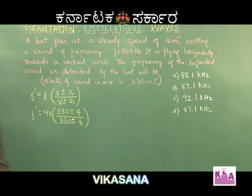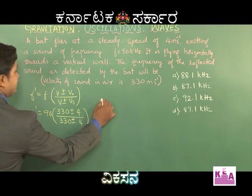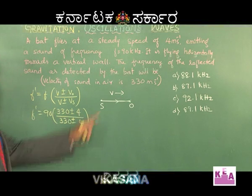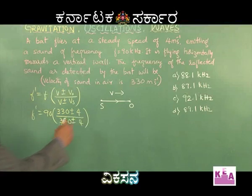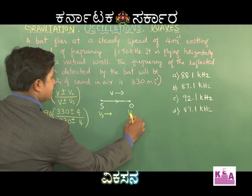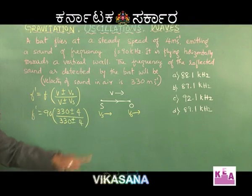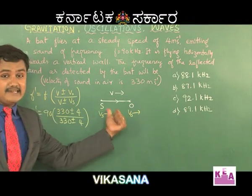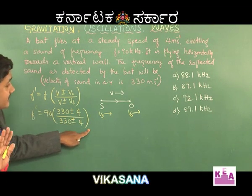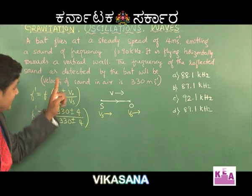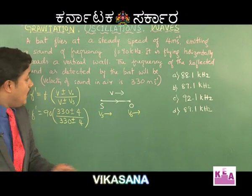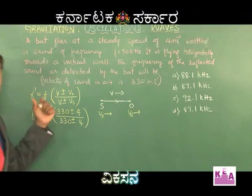The sign convention says: if source and observer are positioned such that sound travels from source to observer in the assigned direction, and the source moves toward the observer (along the assigned direction), take negative sign for V_S. Similarly, if the observer moves in the same assigned direction, take negative. If they move opposite to the assigned directions, take positive in the formula.